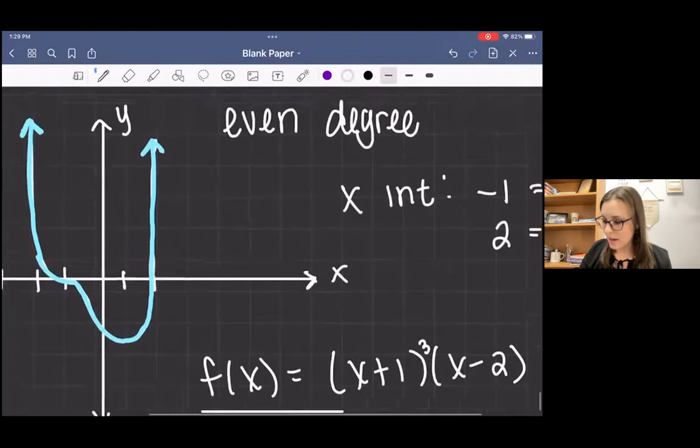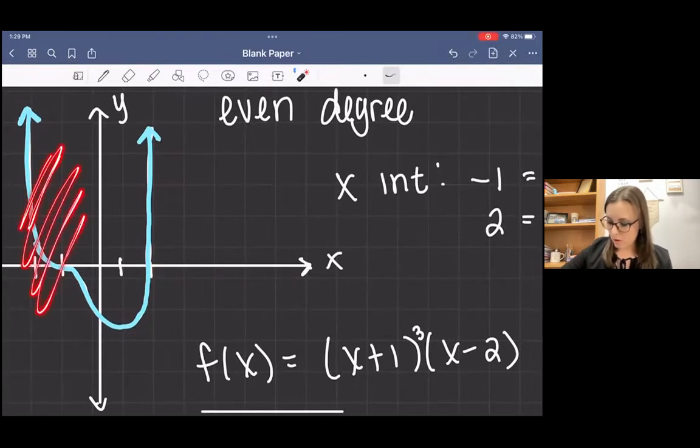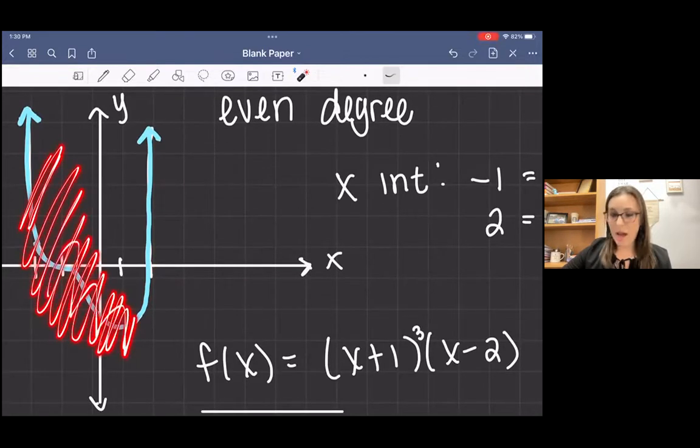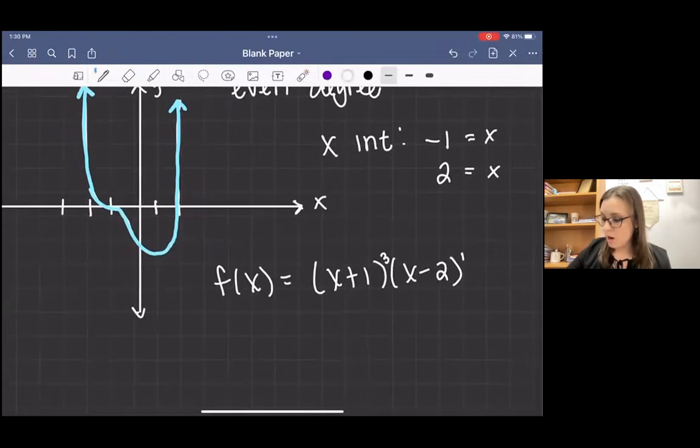Then if I isolate the next x-intercept, if I ignore the rest of the graph, if I discount all this and just isolate that part of the graph that I'm focusing on, it mirrors a linear function. It goes straight through.